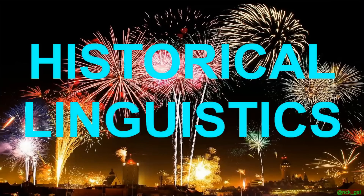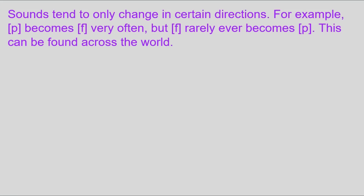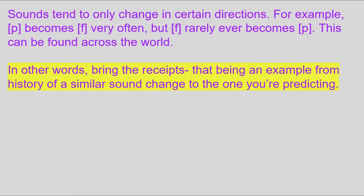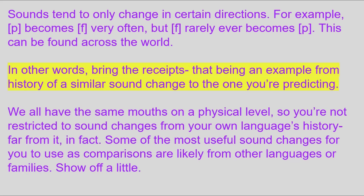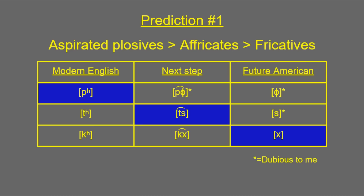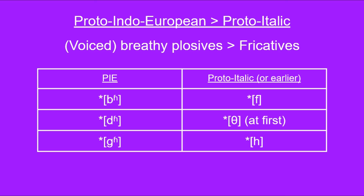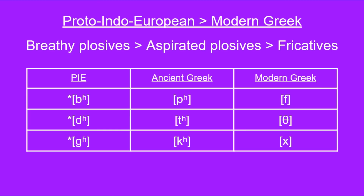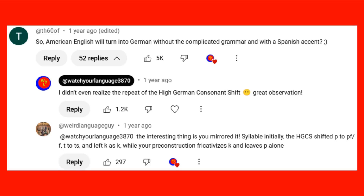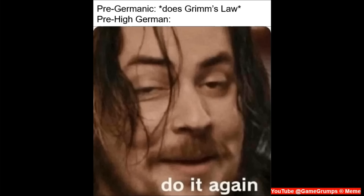Now we get to the fun stuff: using historical linguistics to predict sound shifts. Sound shifts aren't random — there are various linguistic tendencies that make sound changes happen in certain directions. Therefore, if you're making a prediction, you should optimally back it up with a sound change from history that occurred along similar lines, like I did in the Future American video. Bonus points if the sound change is particularly common throughout history, and the historical example doesn't have to be from your own language. I did use a parallel example — the voiced breathy plosives to fricative shift that occurred from PIE to pre-Italic. The top comment on the Future American video very astutely pointed out that I had basically mirror-reversed the High German consonant shift, which I now call Grimm's Law Part 2, and this is actually a really good comparison.